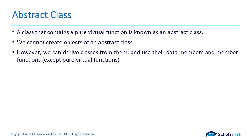In an abstract class in C++, at least one pure virtual function must be present by definition — a function that has no definition. These classes cannot be instantiated. Child classes must provide a body to the pure virtual function; otherwise, the child class itself would become an abstract class.